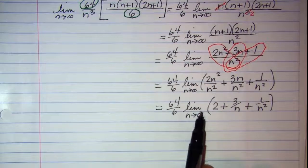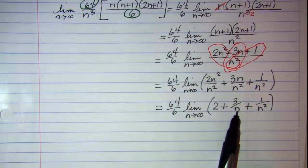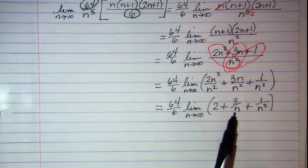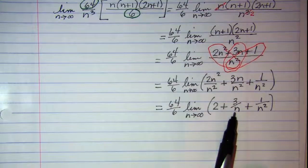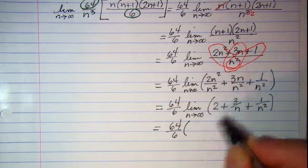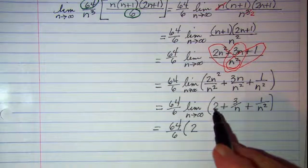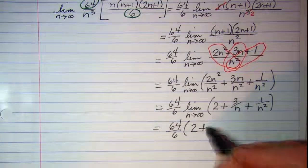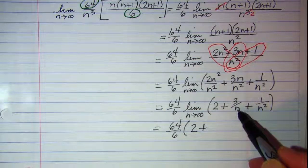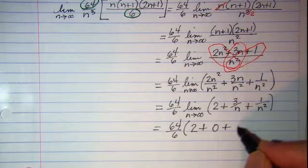And then we know that for a fraction as the denominator gets bigger and bigger approaching infinity, that the whole fraction itself, the whole term, will approach 0. So we now have when we do the limit this will be 2 since there's no n in this term. Nothing happens to that as n approaches infinity. As n approaches infinity here as my denominator gets bigger and bigger this term becomes 0. And this term also becomes 0.